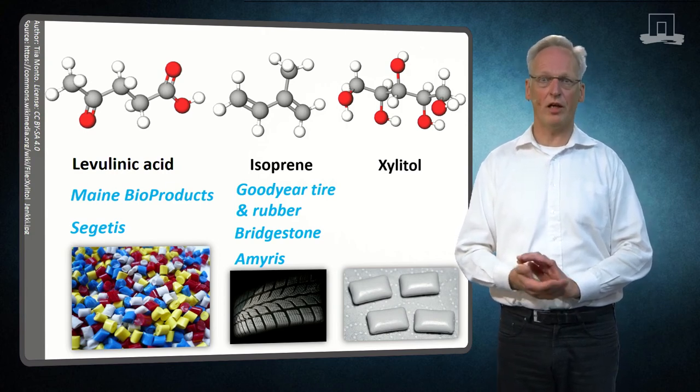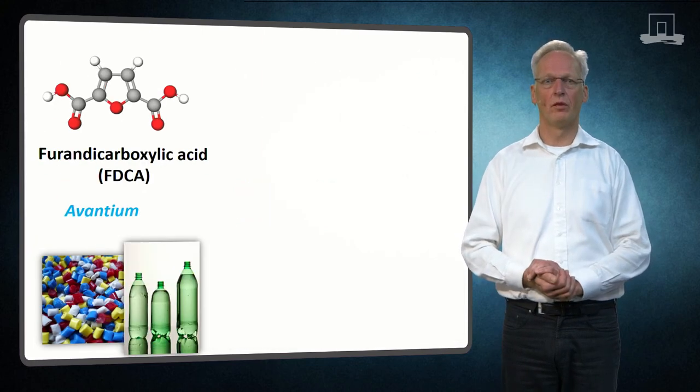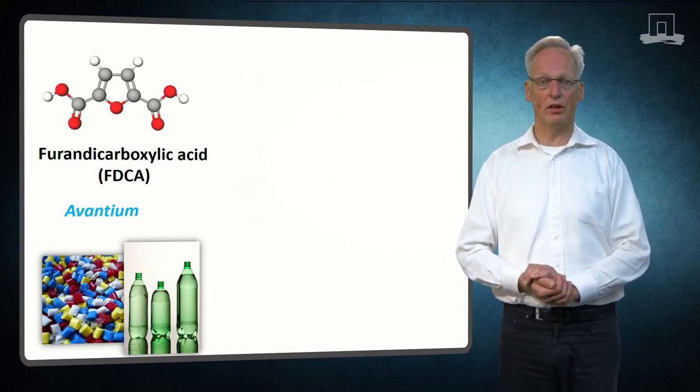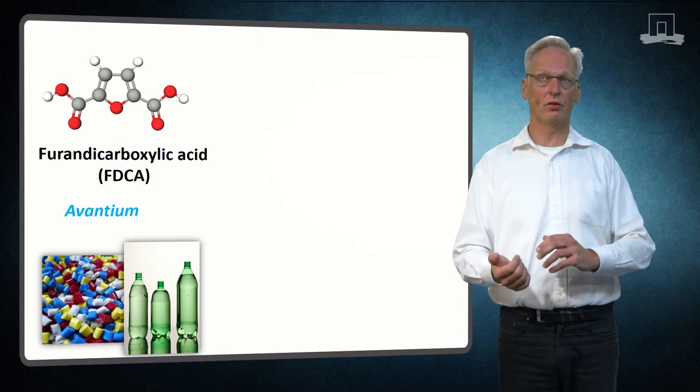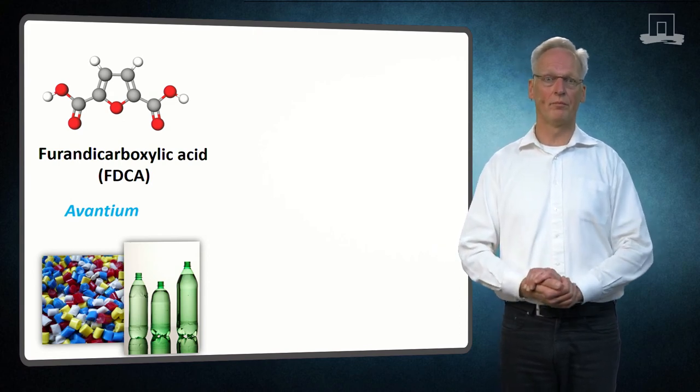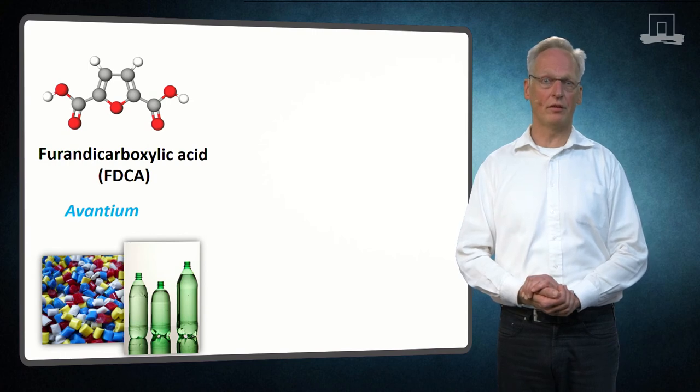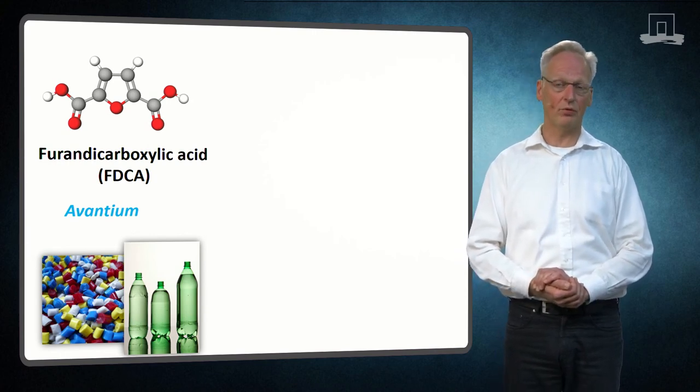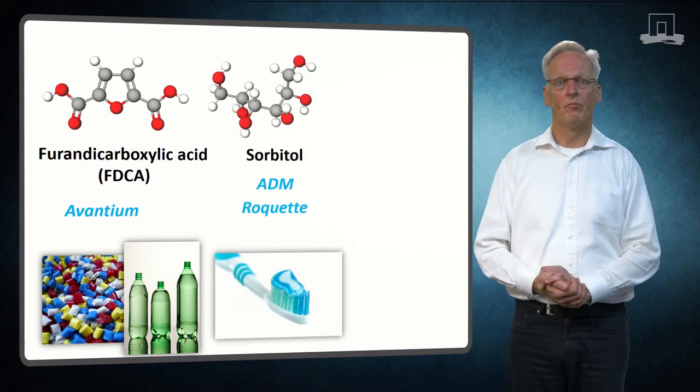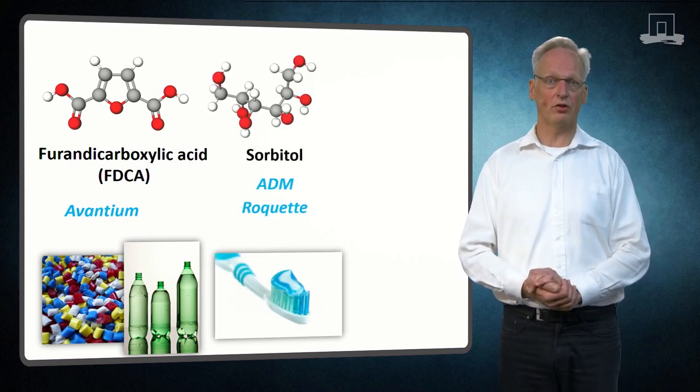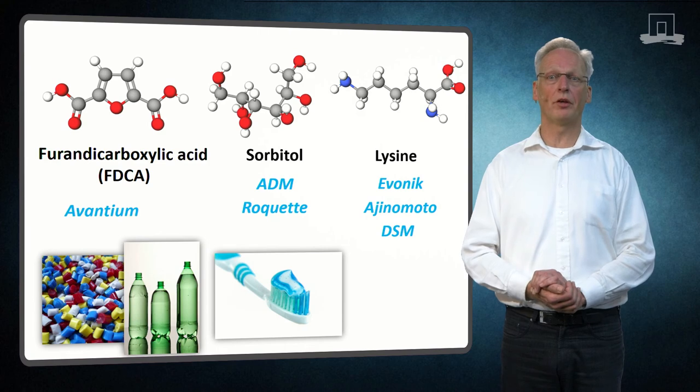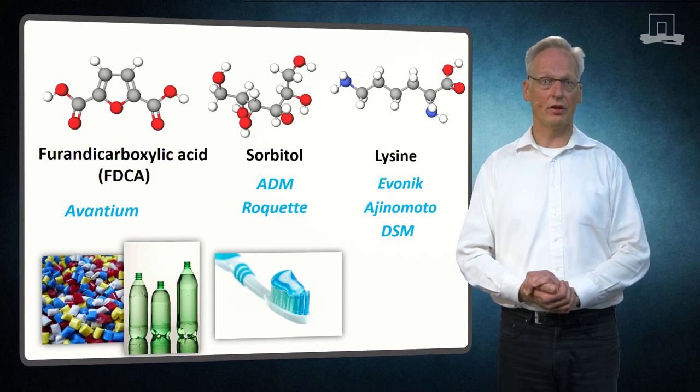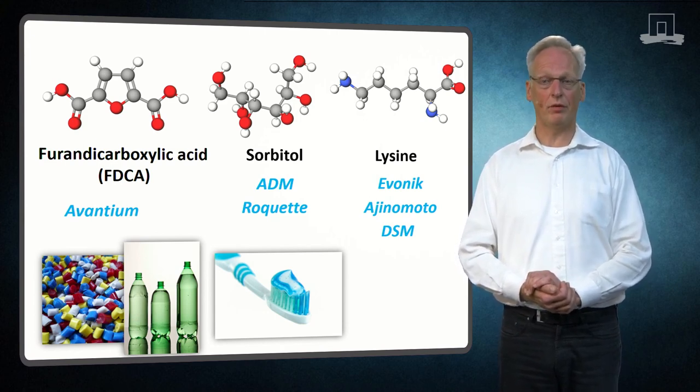Finally, C6-containing compounds include FDCA, sorbitol, lysine, citric acid, caprolactam, and isosorbide. FDCA is a high-potential biobased furanic, promoted by Avantium and others as a platform to replace the common PET. Glucose-based sorbitol is produced at large scale by ADM, Roquette, and others. Biobased routes from lysine to caprolactam formed for the production of nylons are quite established, actually for long. And Evonik, Ajinomoto, and DSM are prominent supplying companies here.